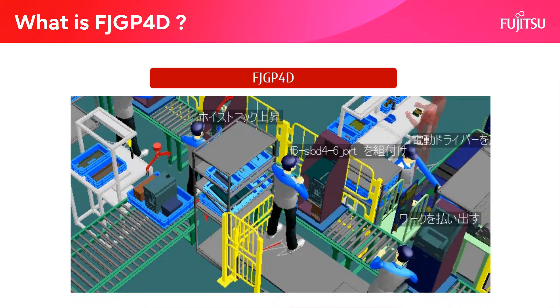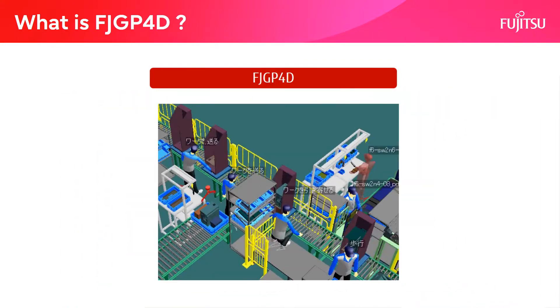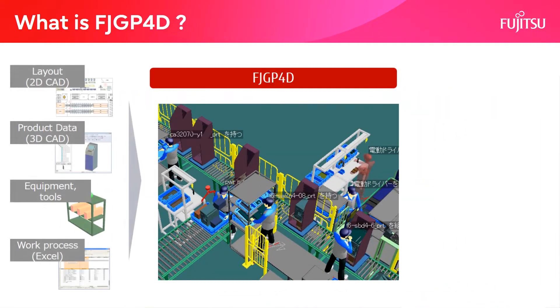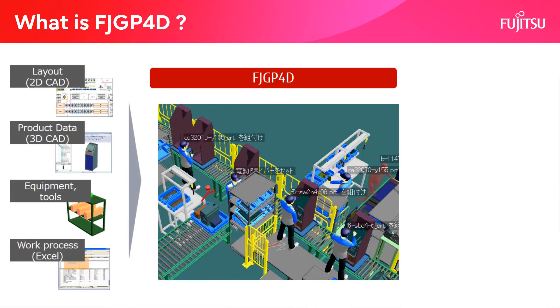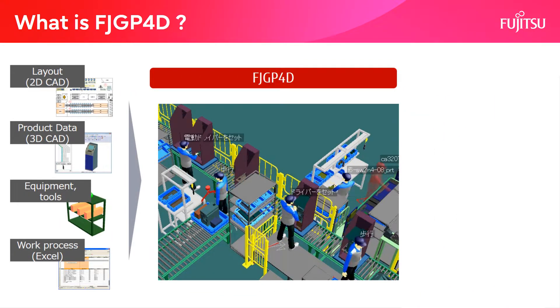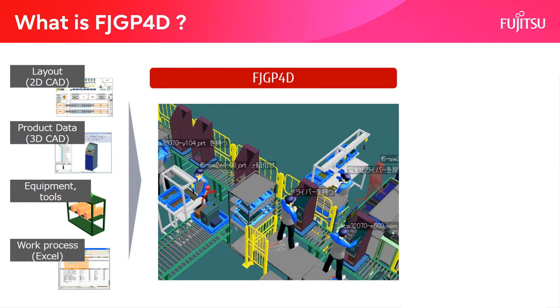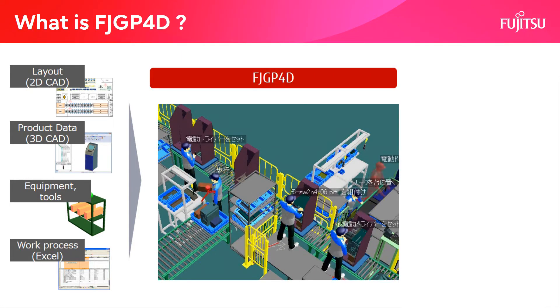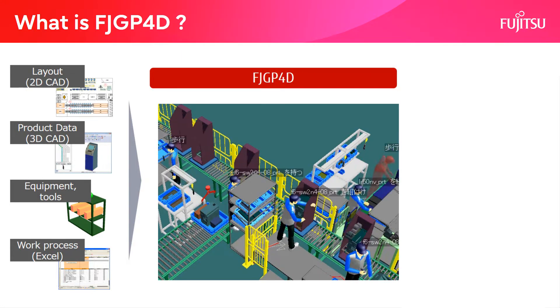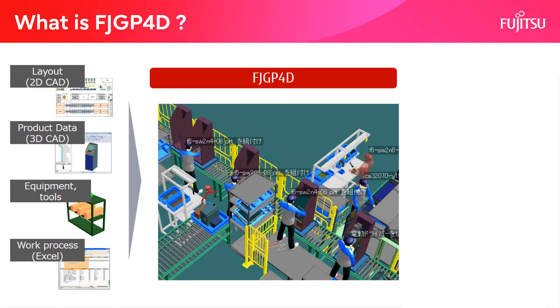FJGP4D creates simulation data by importing 2D factory layout drawings, 3D product data, and work procedure information. It can also be used to consider new production lines without any of these information.